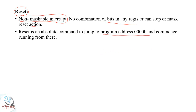The reset process sets the program address to 0000. If you have a new type of programming, all text will be captured and you will be able to run from 0000. The program counter will be set to 0000, and the program will execute starting from that location.